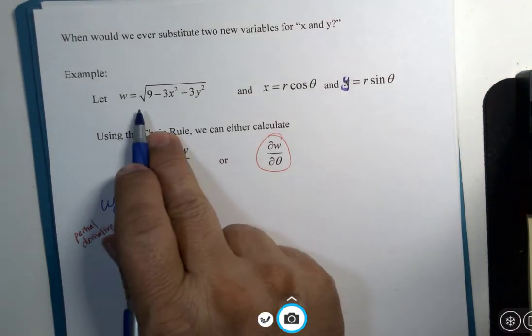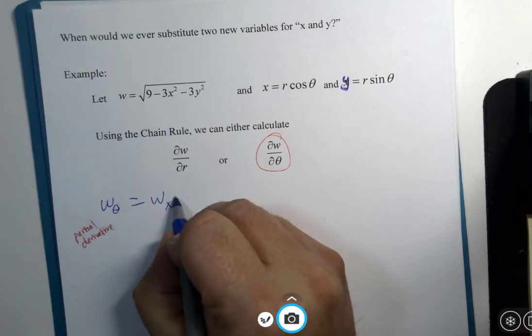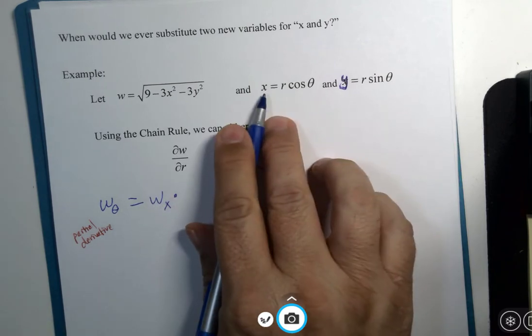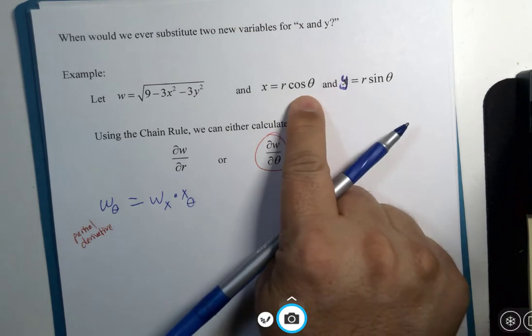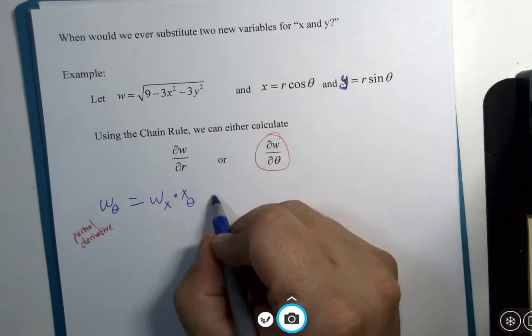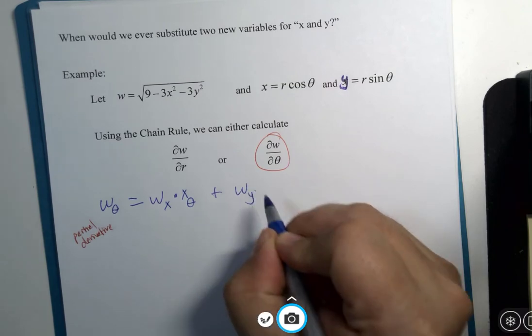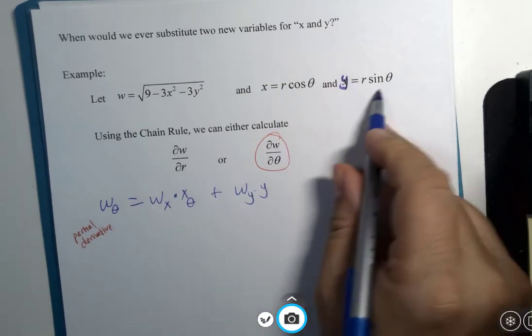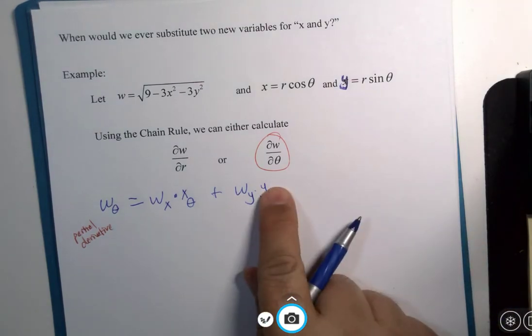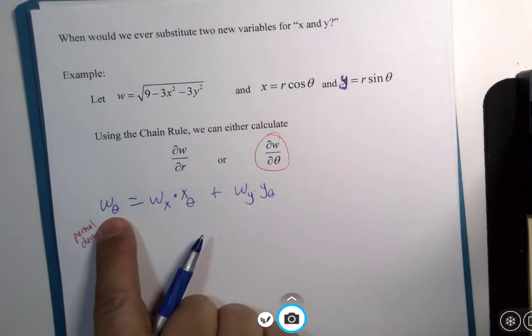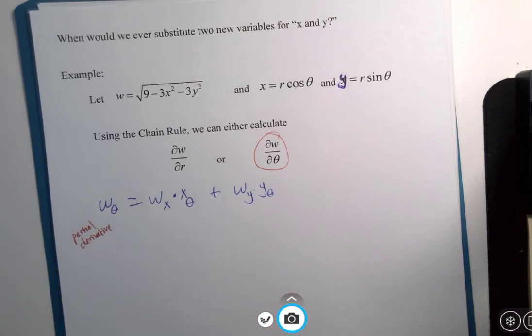Don't you dare use the prime notation here. So you start with your function w and you take the x partial derivative of that multiplied by the x partial derivative with respect to theta, plus the original function's y partial derivative times the y partial derivative with respect to theta. It's almost like the little variables are canceling out, leaving you w theta.